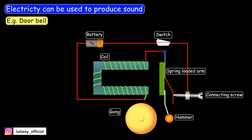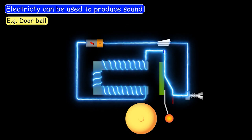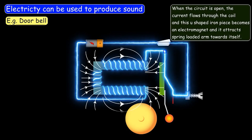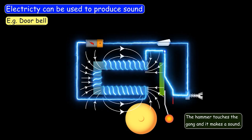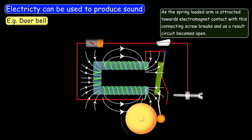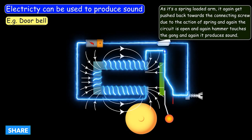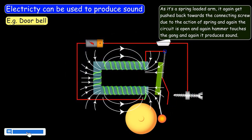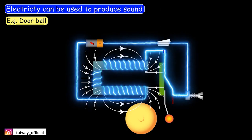When the switch is turned on and the circuit is closed, current flows through the coil, and the U-shaped iron piece becomes an electromagnet that attracts the spring-loaded arm towards itself. The hammer touches the gong and makes a sound. But the circuit breaks right away — as the spring-loaded arm is attracted towards the electromagnet, its contact with the connecting screw breaks, opening the circuit. Since the arm is spring-loaded, it gets pushed back towards the connecting screw, closing the circuit again, so the hammer touches the gong again and produces sound. This happens in a cyclic manner, and we hear the sound of the bell continuously.